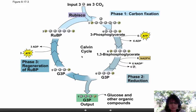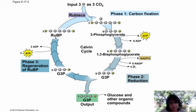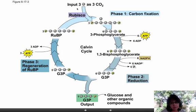You need to do this cycle three times to get a single output, and you actually need to bring in three CO2s to regenerate that starting material. Three CO2s come in. Rubisco, the enzyme that fixes carbon, hooks those three carbons onto three molecules that have five carbons on them. Three times five is 15, plus three is 18. So we make three molecules of six-carbon things. This is very unstable and it quickly splits into six molecules of a three-carbon thing — we're still at 18 carbons.